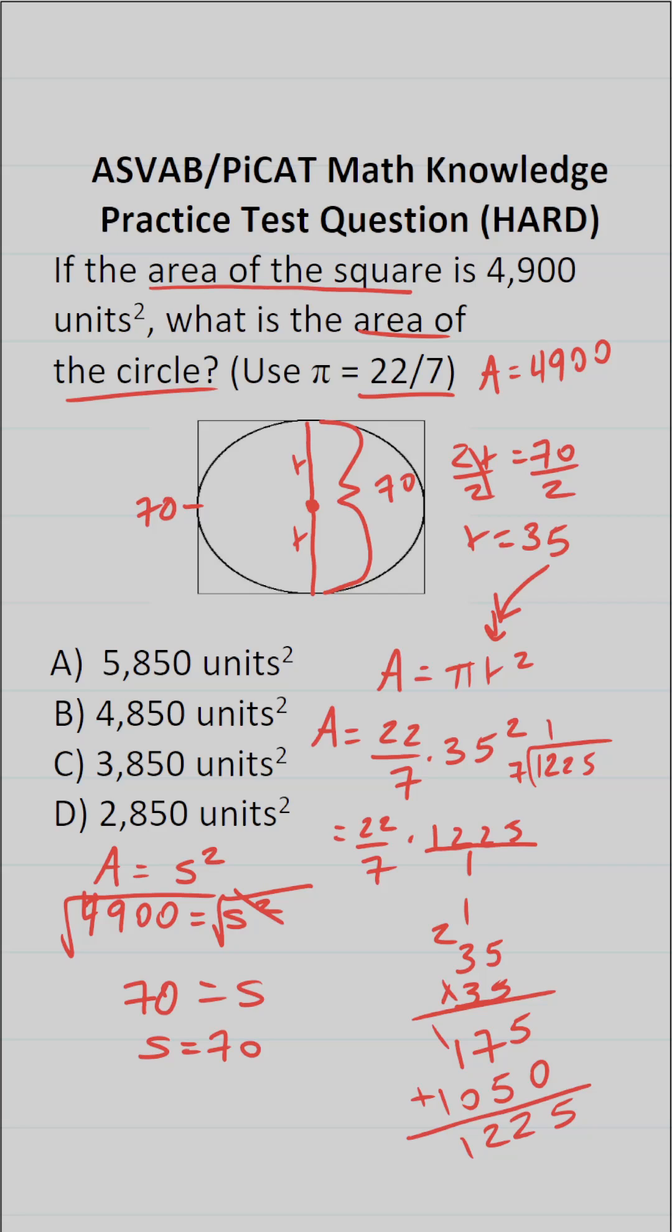7 goes into 12 one time without going over. 1 times 7 is 7. 12 minus 7 is 5. Drop down this 2. 7 goes into 52 seven times without going over. 7 times 7 is going to be 49. 52 minus 49 is 3. Drop down this 5. 7 times 5 is exactly 35 with no remainder. So in other words, 7 goes into 7 one time.